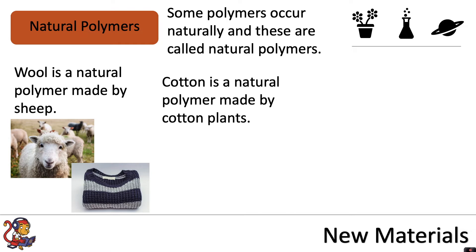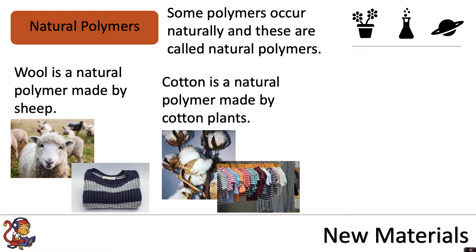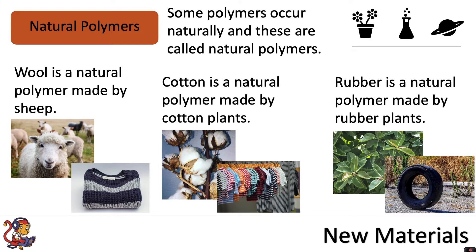Cotton is a natural polymer made by cotton plants, and again we use this mainly in clothing. And rubber is a natural polymer made by rubber plants, and this can be used to make things such as tires.